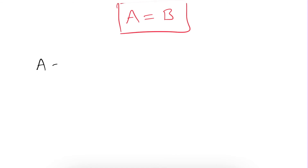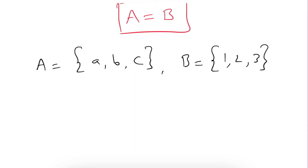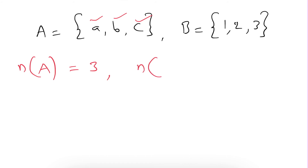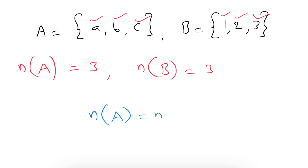Next, I have a set A where the elements are a, b, c, and one more set — set B — where the elements are 1, 2, 3. Now if we write the number of elements: n(A) — how many elements are there? 1, 2, 3 — so 3 elements are there in set A. The same way, n(B) — number of elements in set B — 1, 2, 3 — 3 elements are there.